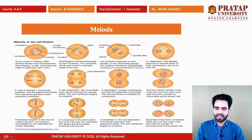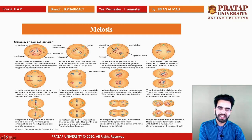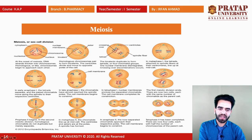In anaphase II, the separated chromatids approach their respective poles and the cell membrane begins to constrict. In telophase II, when complete, there are now four cells, each with half the number of chromosomes of the parent cell. This is why meiosis II is called reductional division, while meiosis I is called equational division because chromosome number remains the same. This is the whole process of meiosis.